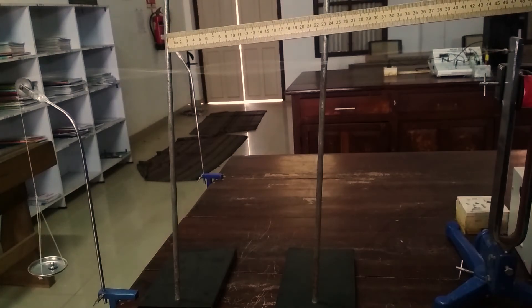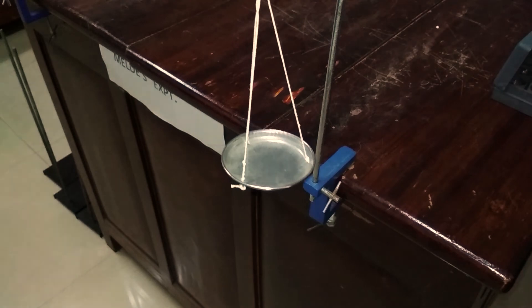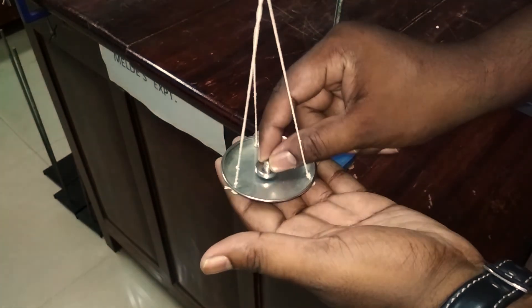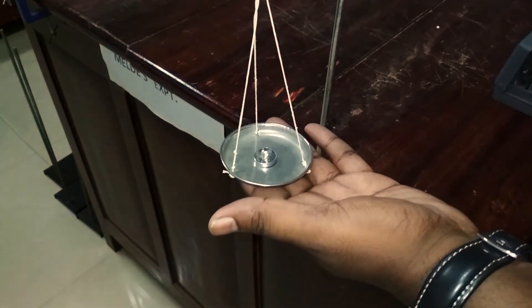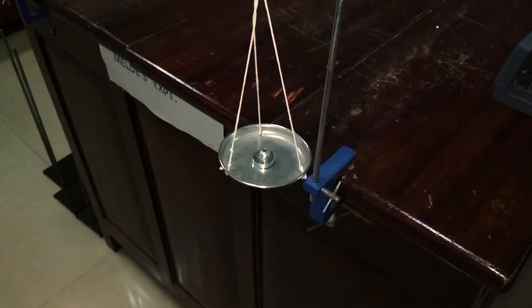We can find the tension in the string by adding the mass of the pan and mass in the pan then multiplying by gravity. Repeat this experiment by changing the weight in the pan step by step.